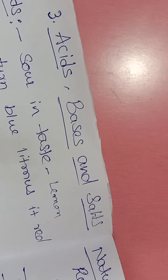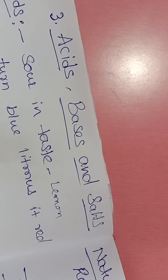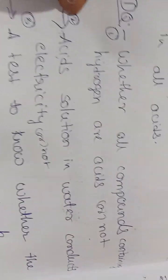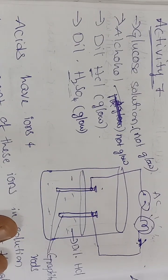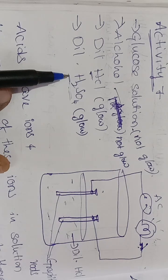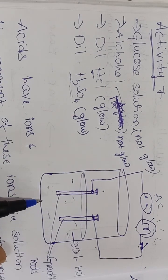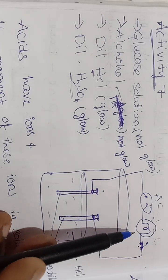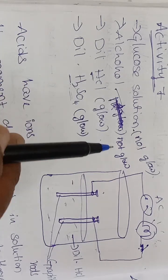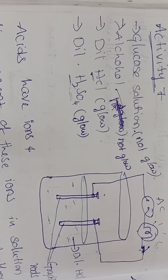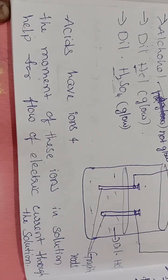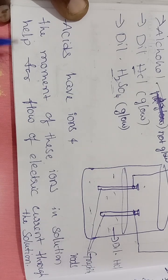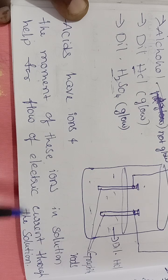Hello children, today we are going to discuss acid, bases and salts Part 2. In the previous class we discussed activity 7 - the first question: whether all compounds containing hydrogen are acids or not. In the lab activity, when adding hydrochloric acid and sulfuric acid to water, it conducts electricity and the bulb glows. If you add alcohol and glucose solution, the bulb does not glow. So only compounds containing hydrogen ions conduct electricity - that is our first conclusion.